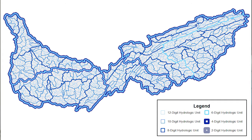The NHD represents the drainage network of the United States with features such as rivers, streams, canals, lakes, ponds, coastline, dams, and stream gauges. The NHD provides a routed network that supports the analysis of any type of movement, for example, navigation, sediment transport, and effluent dispersion by surface waters.